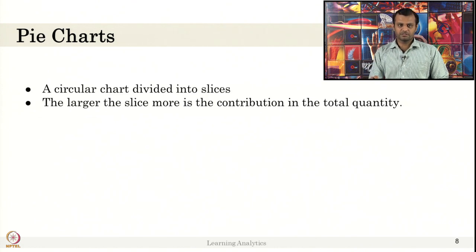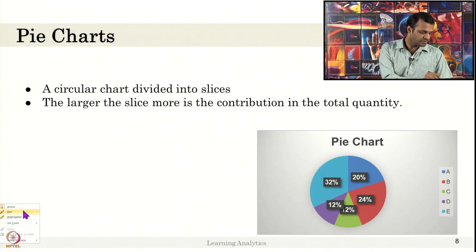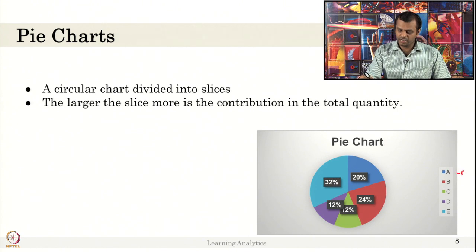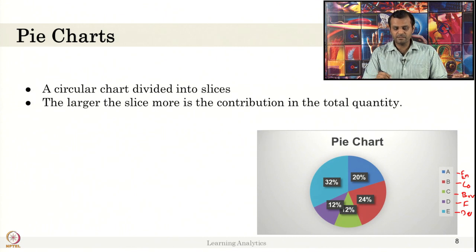Let us move on to pie charts. Pie chart is a circular chart divided into slices. The larger the slice, the more contribution it has made to the total quantity. Here is an example pie chart. Let us consider this is the distribution of emotions in online session. Let us consider A is student's engagement and this is student's delight and less frustrated, confused, bored. If you want to represent out of the total time in the online session, say 20 percent of time students is engaged, 32 percent they are delighted and 12 percent they were frustrated and 12 percent bored. In 24 percent of time they are confused.